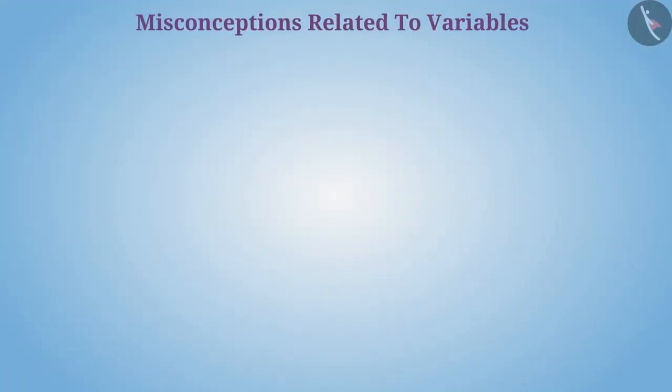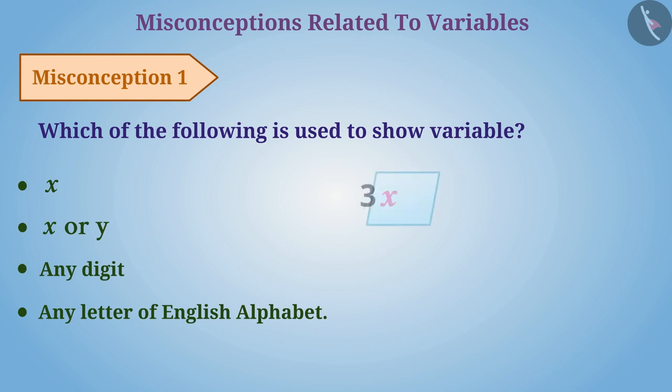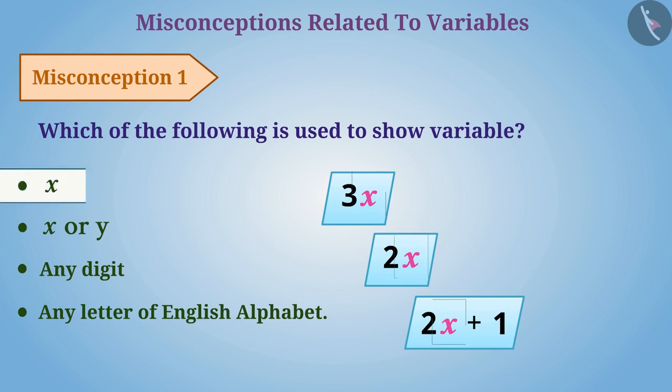Misconceptions related to variables. Misconception 1: Which of the following is used to show variable? Due to repeated use of x for the variable, it becomes an understanding that only x is used to show a variable. This is a misconception.